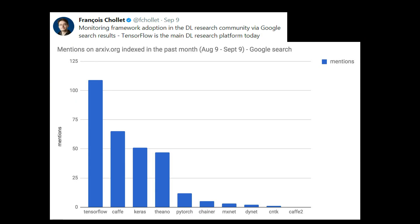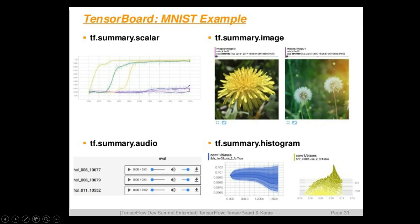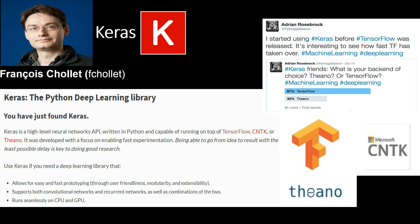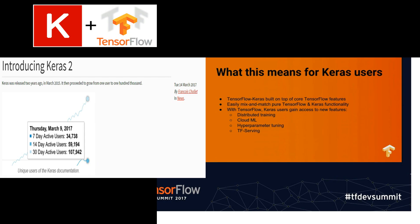A tweet from just two months ago shows that among researchers, TensorFlow is by far the most popular framework. TensorBoard lets you visualize histograms, images, embeddings, loss, learning, and everything. Keras is really my favorite — it's very easy to use, very modular, and really cool. It has backends for TensorFlow, Theano, and CNTK, and with the release of Keras 2, TensorFlow is kind of built into Keras 2.